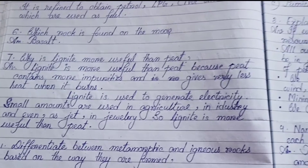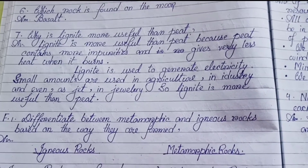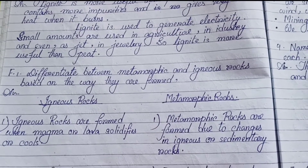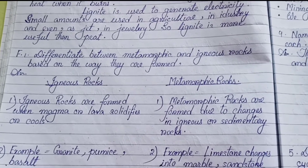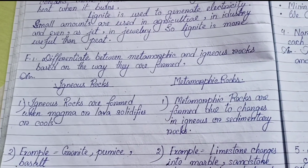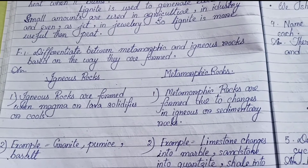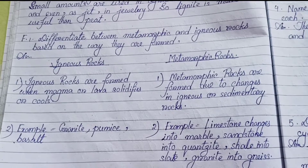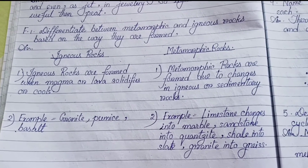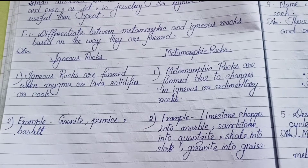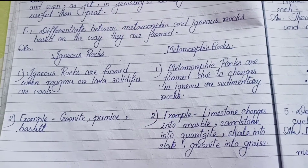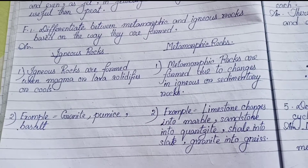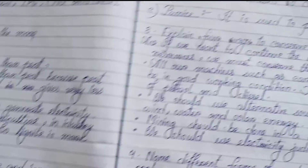Number eight: Differentiate between metamorphic and igneous rocks based on how they are formed. Igneous rocks are formed when magma or lava solidifies or cools. Metamorphic rocks are formed due to changes in igneous or sedimentary rocks. Examples of igneous rocks: Granite, Pumice, Basalt. Examples of metamorphic rocks: Limestone changes into Marble, Sandstone into Quartzite, Shale into Slate, Granite into Gneiss.